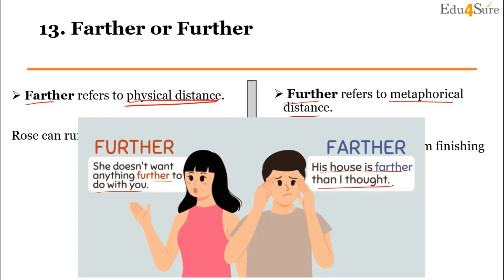The trick to remember the difference: 'Farther' has the word 'far' in it, so you can relate it to actual physical distance. 'Further' has a U — you can associate U with 'unreal' or metaphorical distance. So farther = physical/real distance, further = metaphorical/unreal distance.